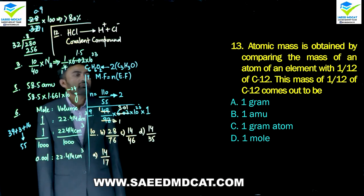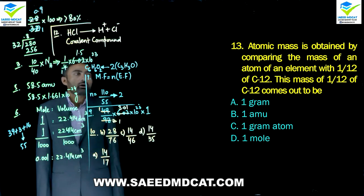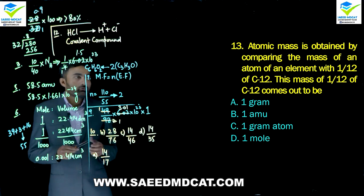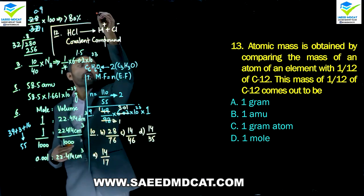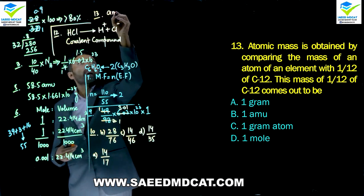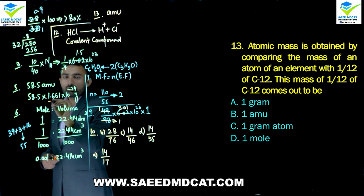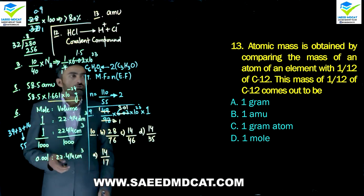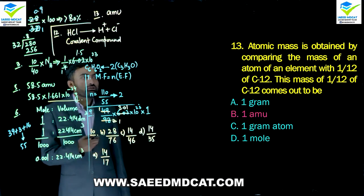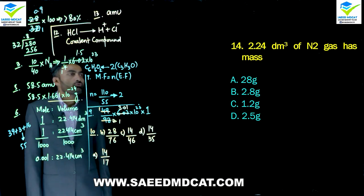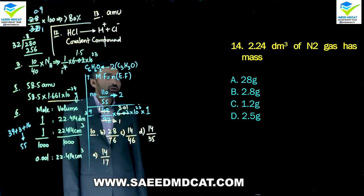Question 13: Atomic mass is obtained by comparing the mass of an atom with 1/12 of carbon-12. This value is called 1 amu, and equals 1.661×10⁻²⁴ grams. So beta option (1 amu) is correct.